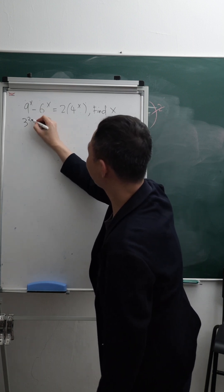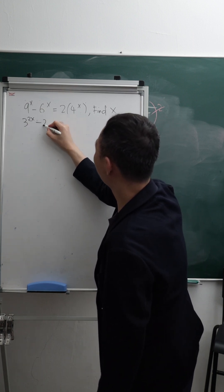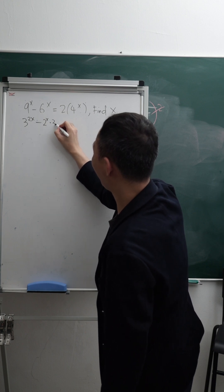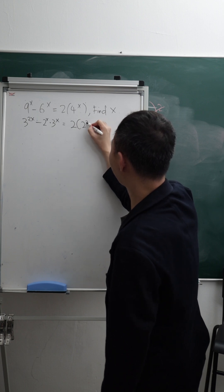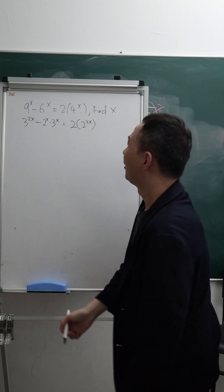This one I will say is 3 power of 2x. This one is 2 power of x multiplied by 3 power of x to get 6 power of x. And then equals to 2, this is 2 power of 2x.